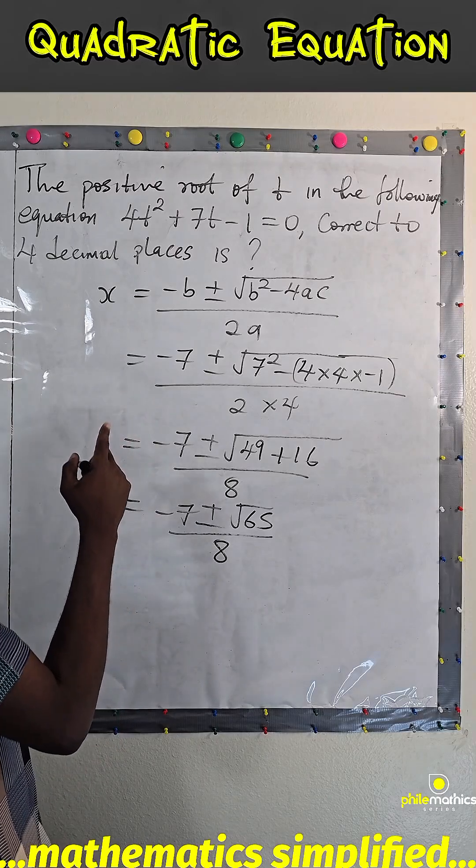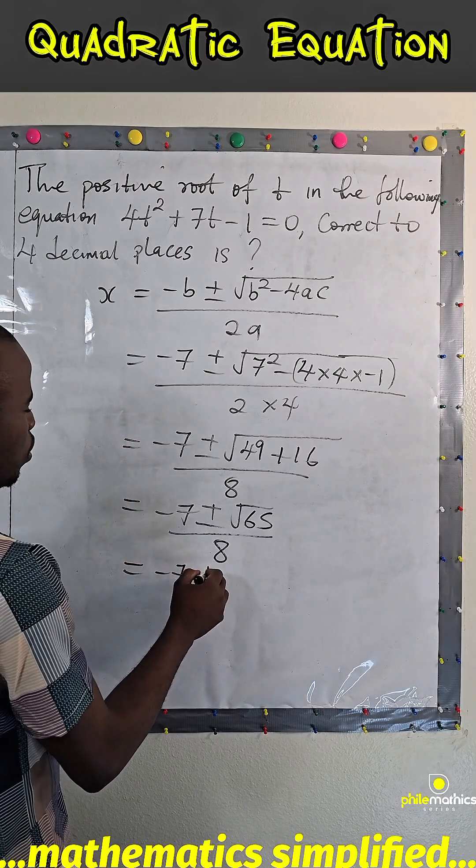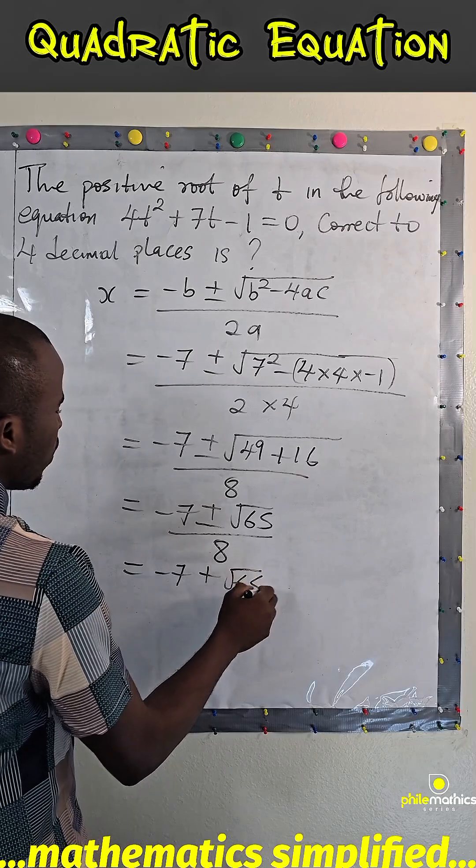So to look for the positive root, it will simply be -7 + √65 over 8.